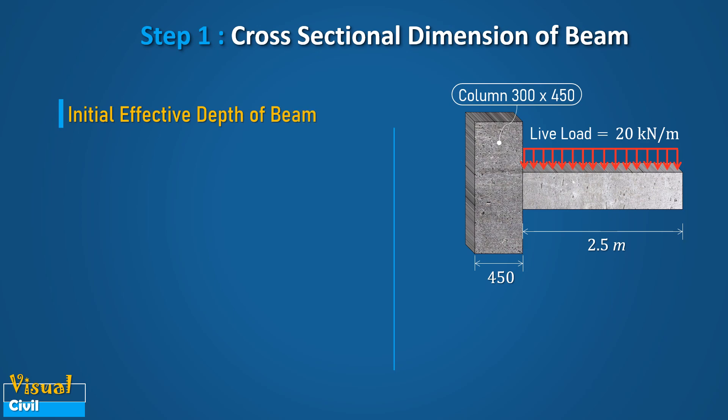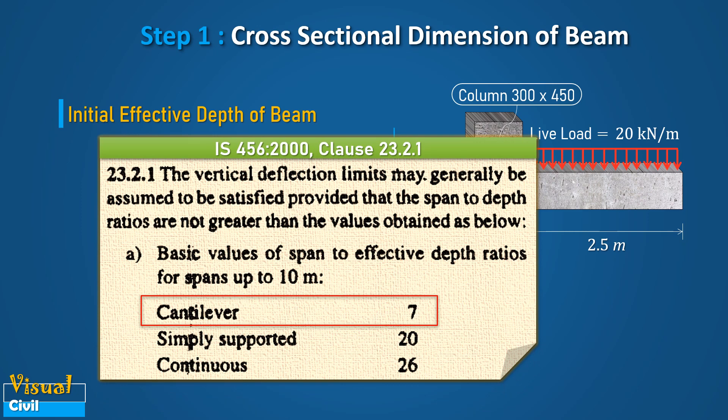In step 1, let us decide the initial cross-sectional dimension of the beam. The initial effective depth of the beam can be assumed based on vertical deflection criteria by referring to clause 23.2.1 of IS 456. This clause gives the maximum values of span to effective depth ratios, which result in the minimum effective depth for different span lengths and support conditions. Here, let us assume the value of span to depth ratio as 7.